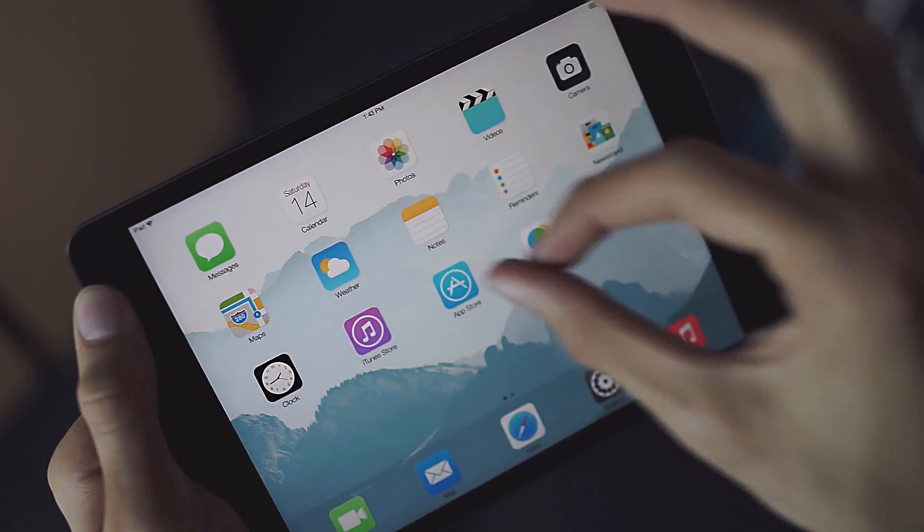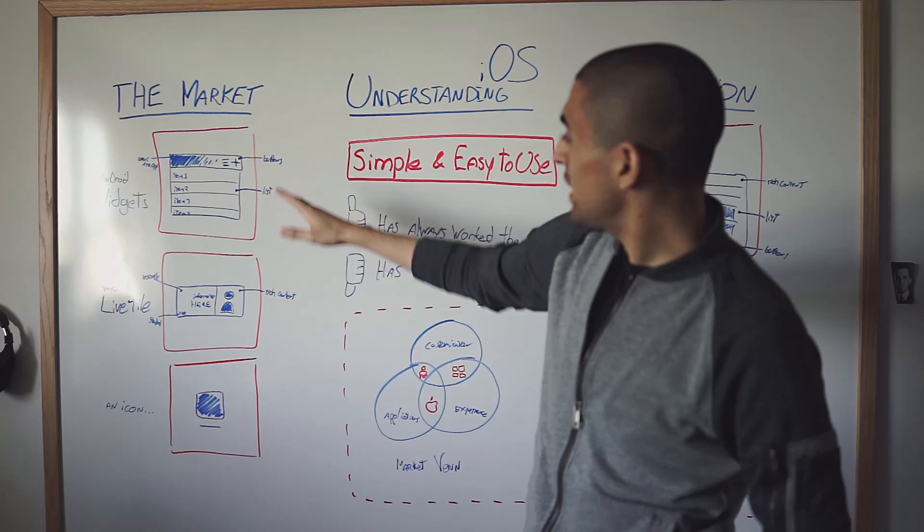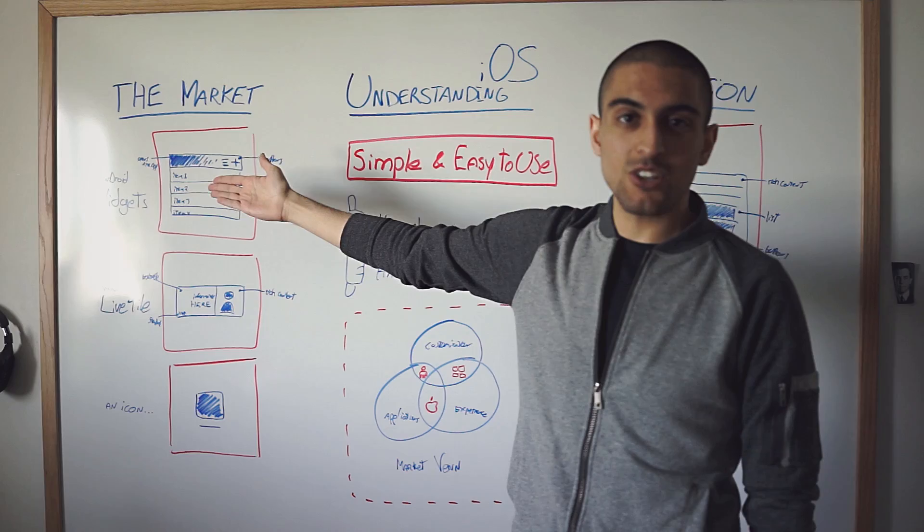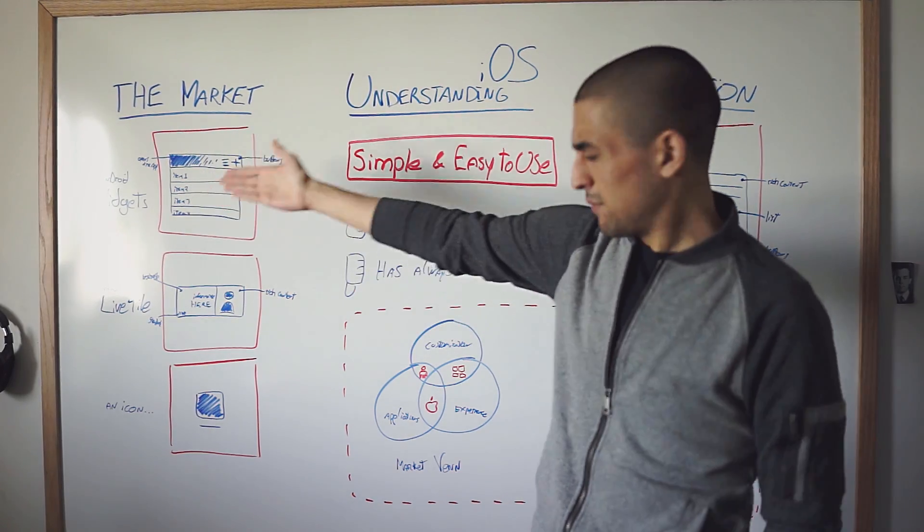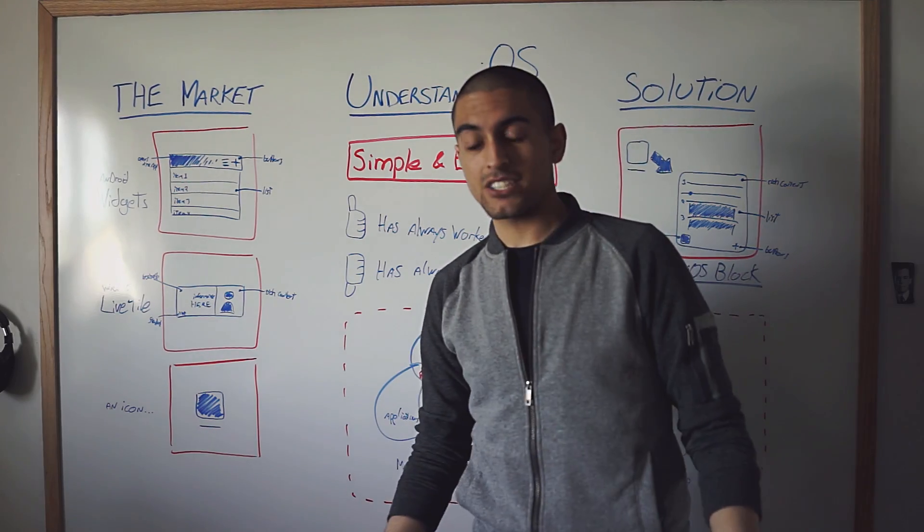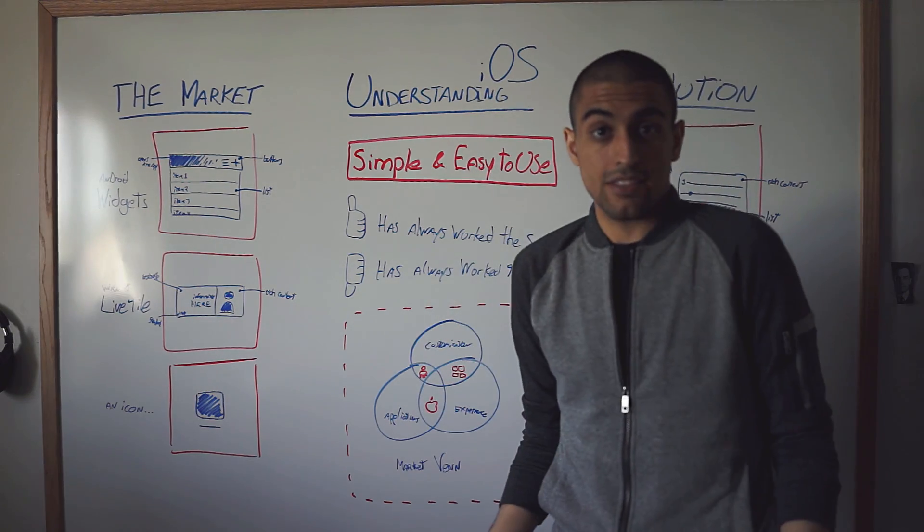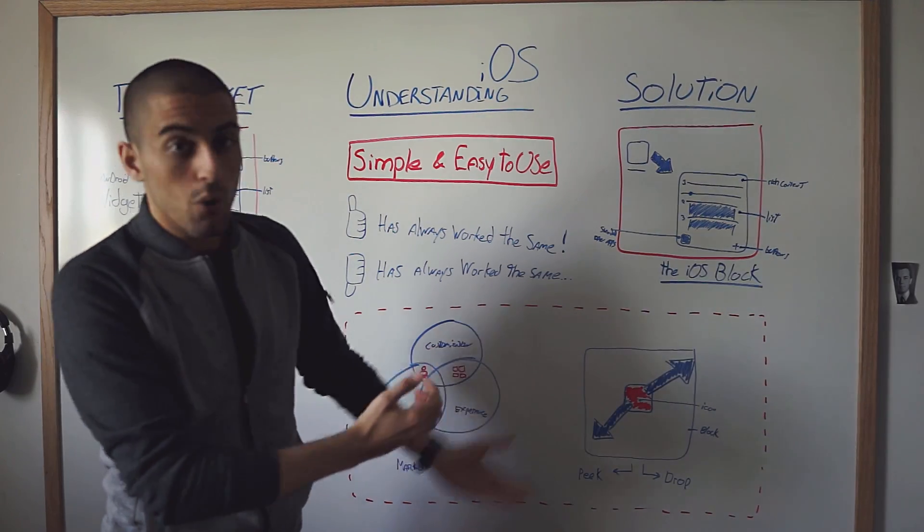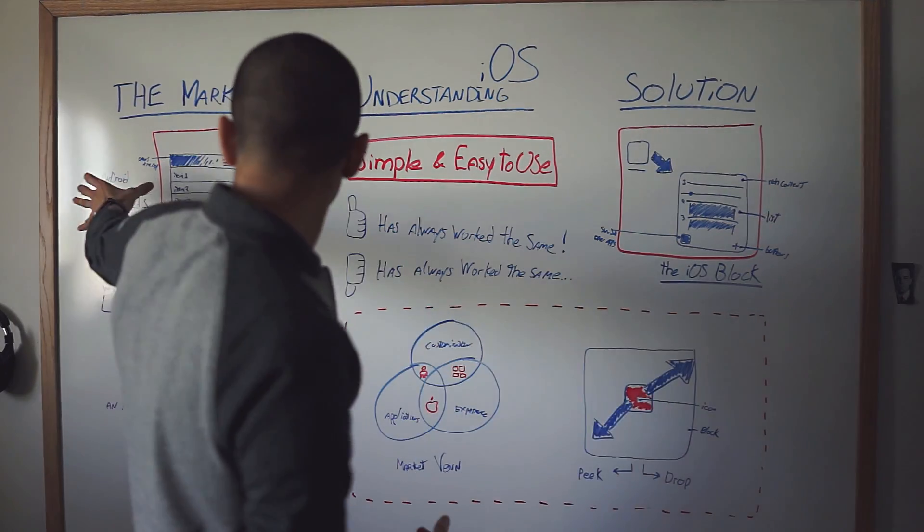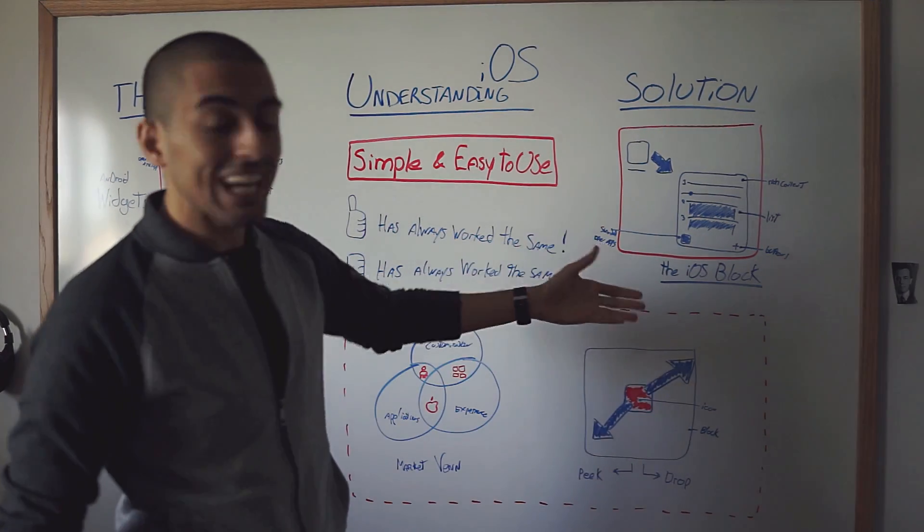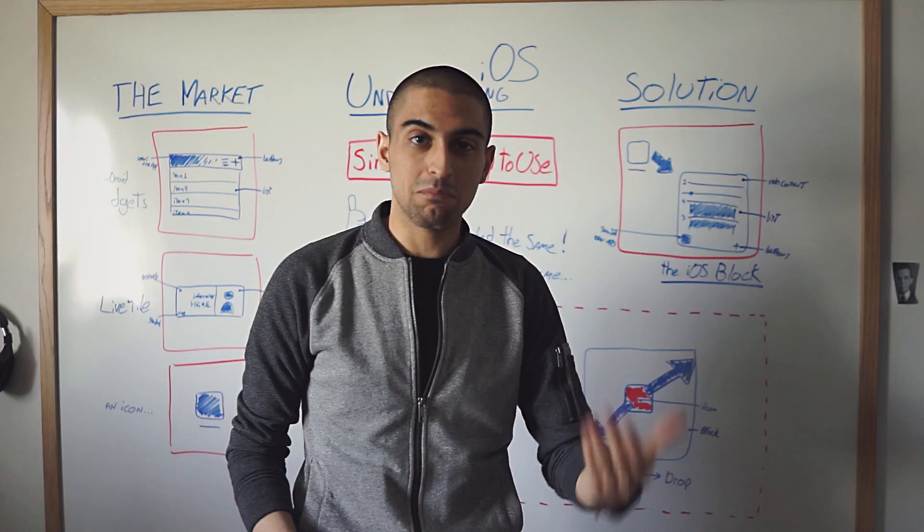The extra there is that compared to widgets and live tiles, you basically have the best of both worlds. So, remember, a widget, you can interact with it, but it's not very standard and separate from the application. A live tile is great because it's the app itself. It's very integrated, but you can't do anything with it. The magic with the iOS block is that you have both of the best out of the widgets and the live tile. Kind of putting an Apple trick there.